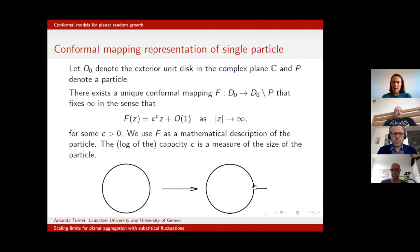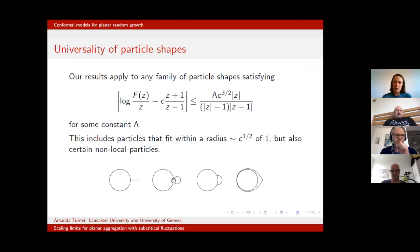In the picture I've illustrated the particle as a slit, and in the simulations I'll show later I'll use slit particles. But our results are very universal in the shape of the particle. Obviously we can have slits, but people normally think about little discs being attached or bumps, or particles that aren't even localized — some spread around the disc, more prominent in one direction.